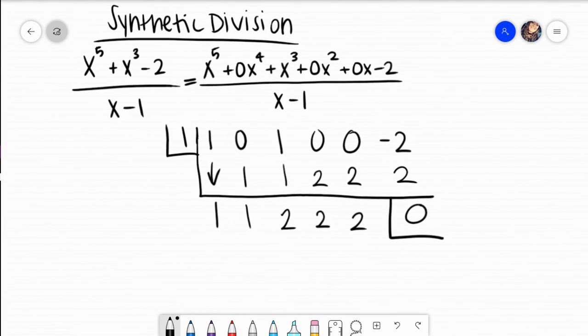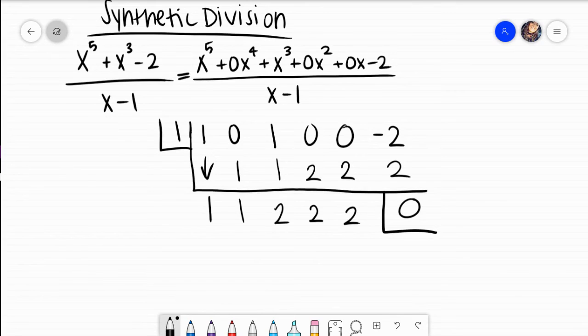So the actual answer, the quotient to this synthetic division problem, I know that I'm going to write the numbers that I have computed right down here at the bottom. And what I do is I actually look at the individual variables and exponents, and when I write the answer, those will go down by an exponent.